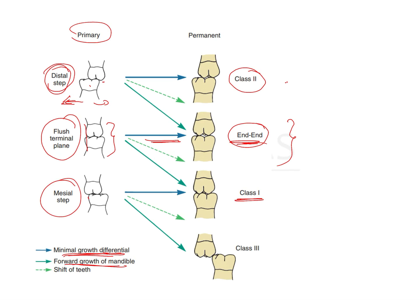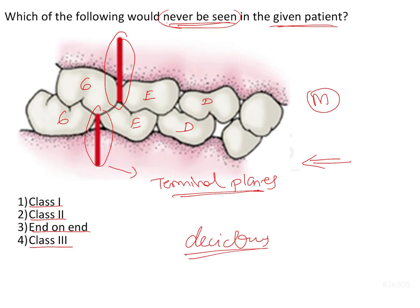For a mesial step, the mandibular molar is more mesially placed. With minimal growth it remains in a similar relationship where the mandibular molar is slightly ahead, as seen in a class 1 molar relationship. However, if there is further growth of the mandible and further mesial movement of the mandibular dental arch, it translates into a class 3 type of relationship.